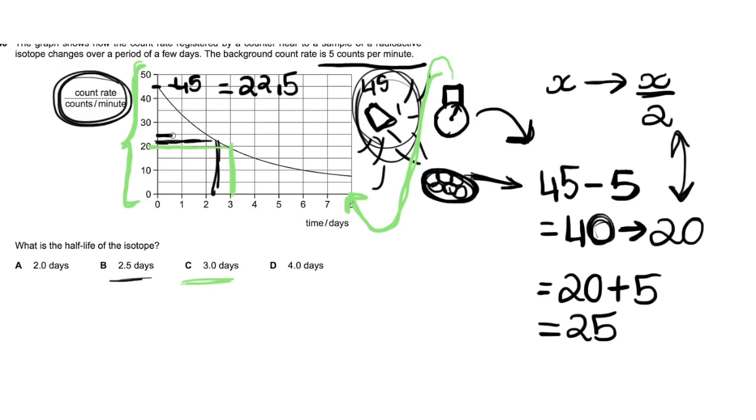And 25 counts per minute is right here. If you sort of compare the x-value of time, that's 2 days, so A is your answer.